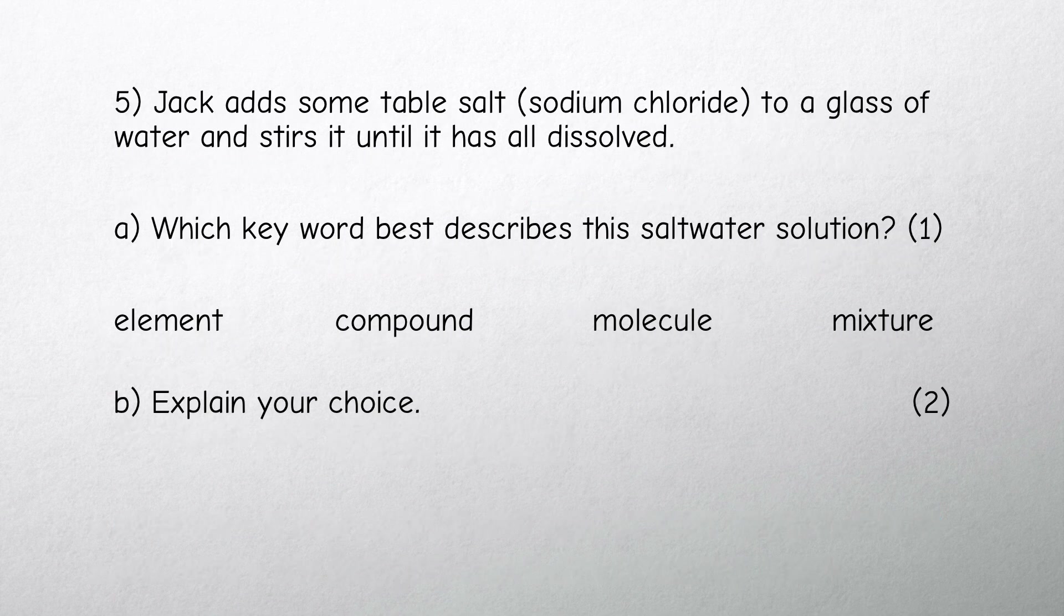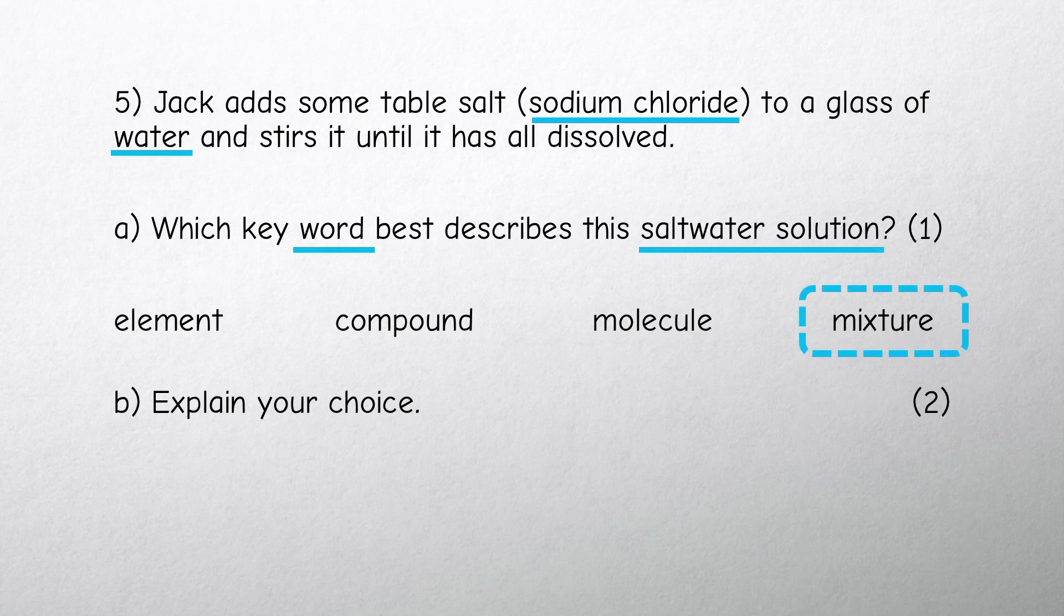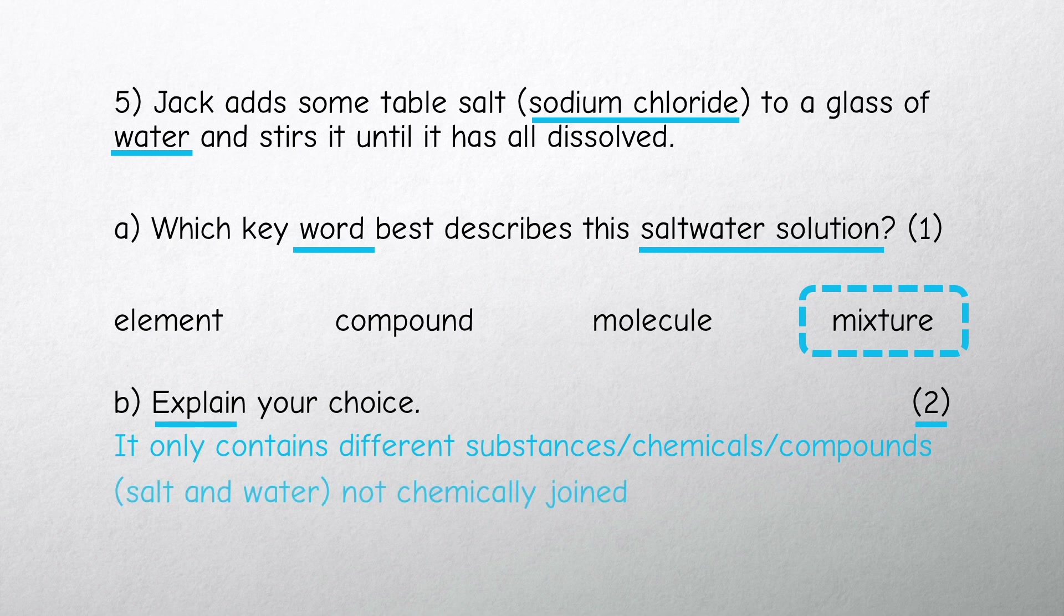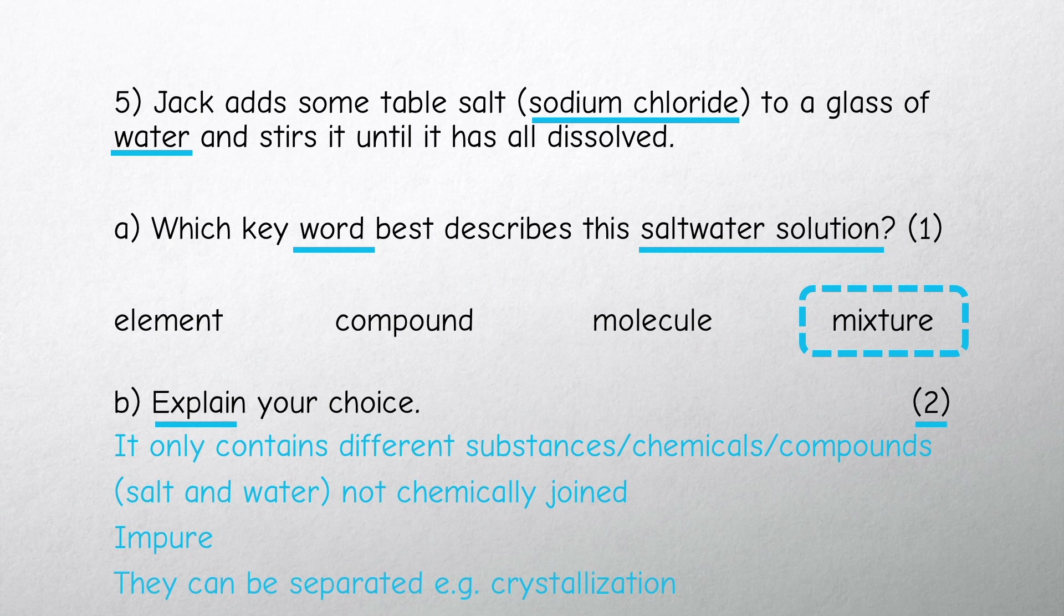Salt water is a mixture because it contains different substances or chemicals - salt (sodium chloride) and water - but they are not chemically joined together. It can be described as impure and they can be separated.